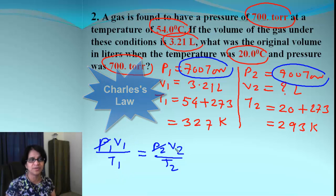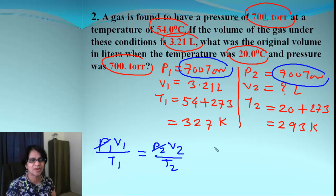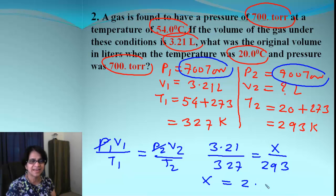So, basically, our law is V1 over T1 equals V2 over T2. When you plug that, what do we get? 3.21 divided by 327. And this will be X divided by 293. So, what is the X value? If you calculate X, that will be 2.88 liters.